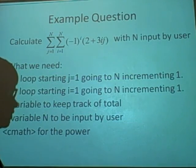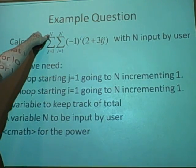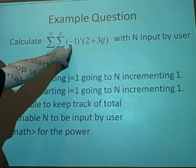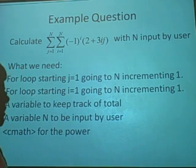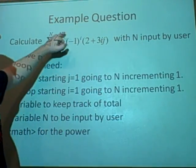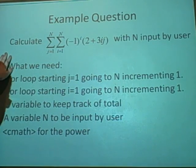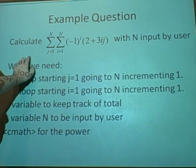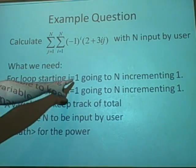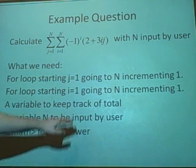We've got an example question here. This is saying calculate the sum from j=1 to N, and i=1 to N, of (-1)^i times (2 + 3ij). With N, the values up here, input by the user. So what do we need to do this? It's always good to write down what you need to do. We need a for loop, because it's going up in ones, so that would be the best way to increment it each time. Starting at j=1 and going up to N, incrementing by 1. The same for i.